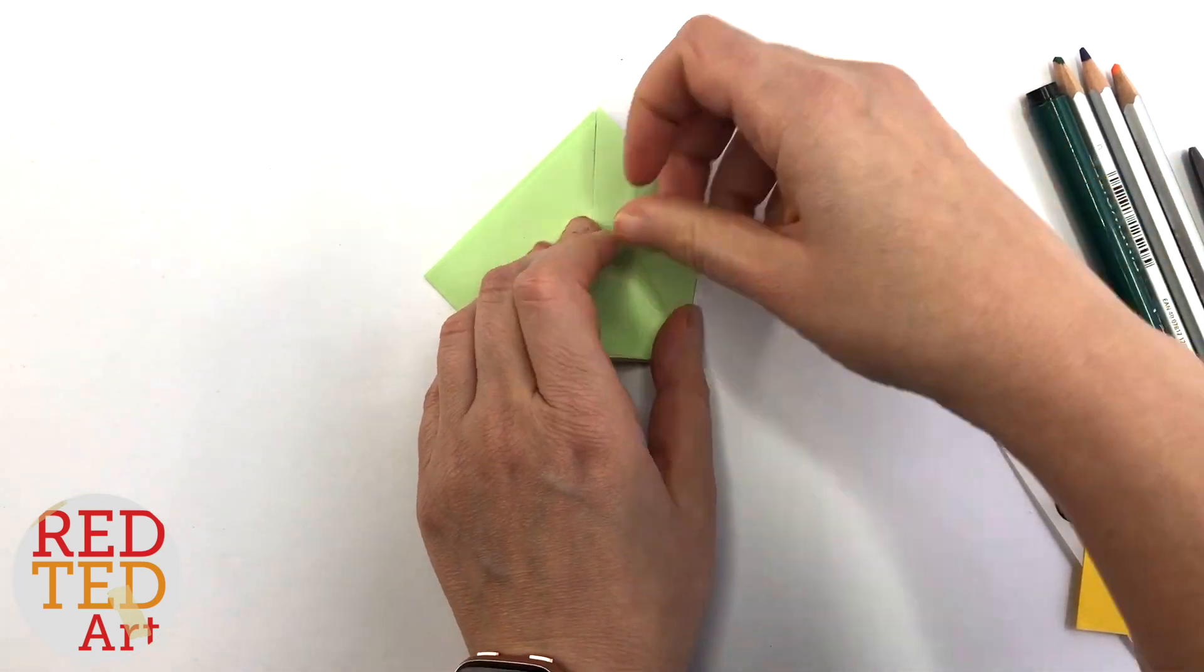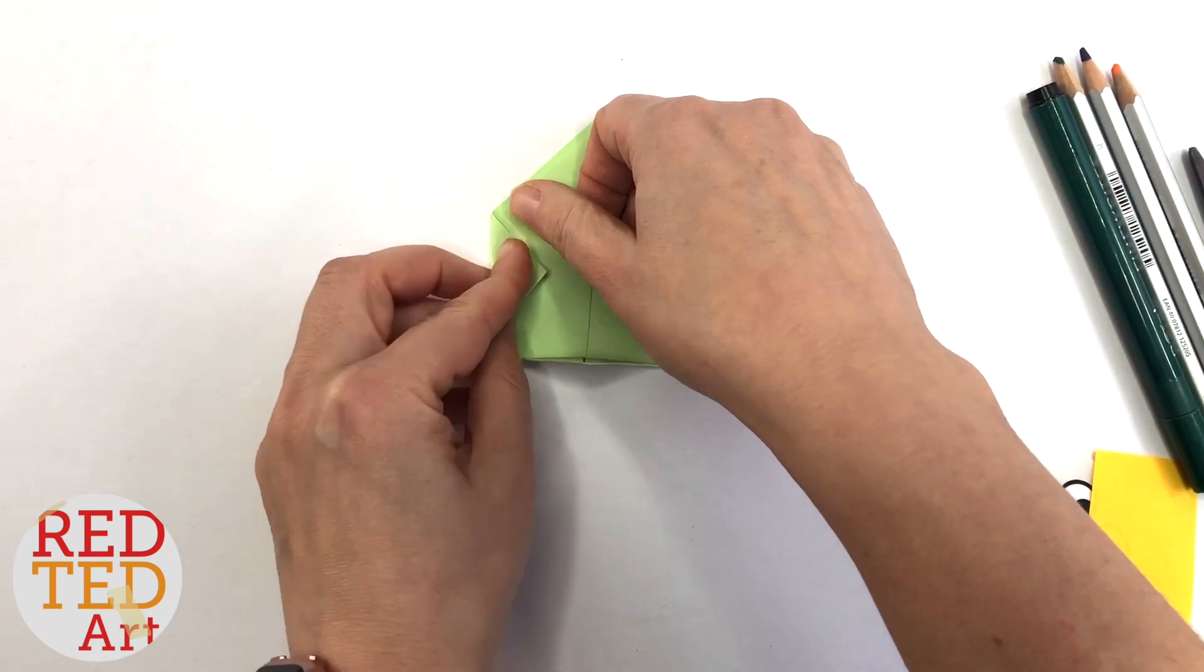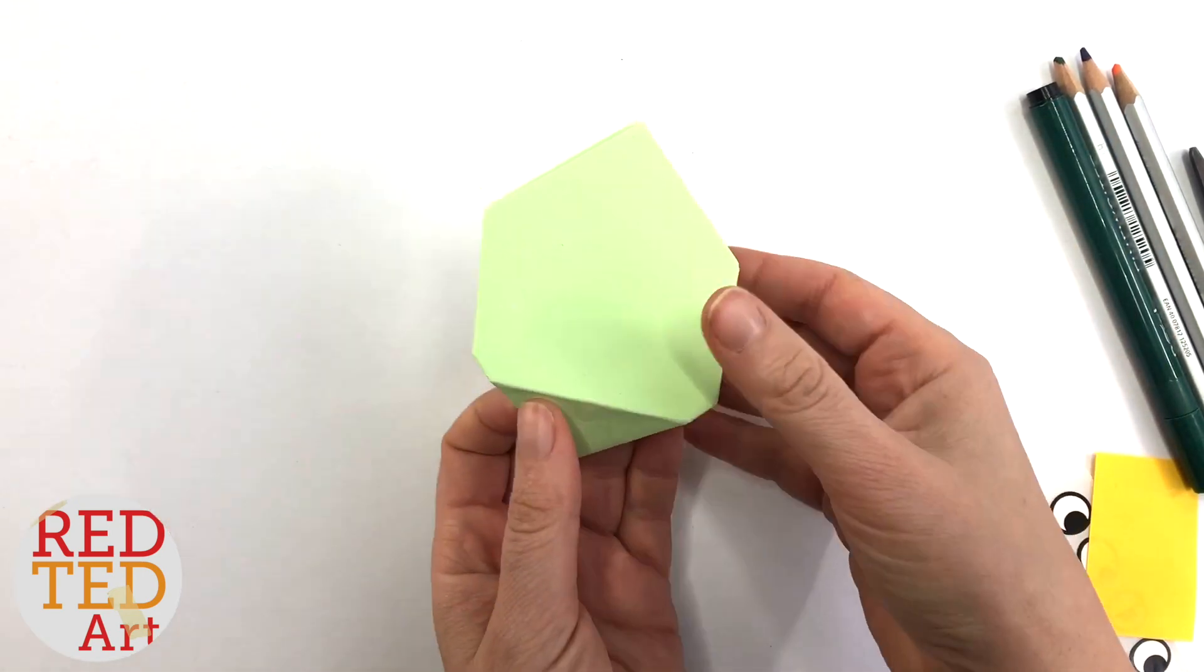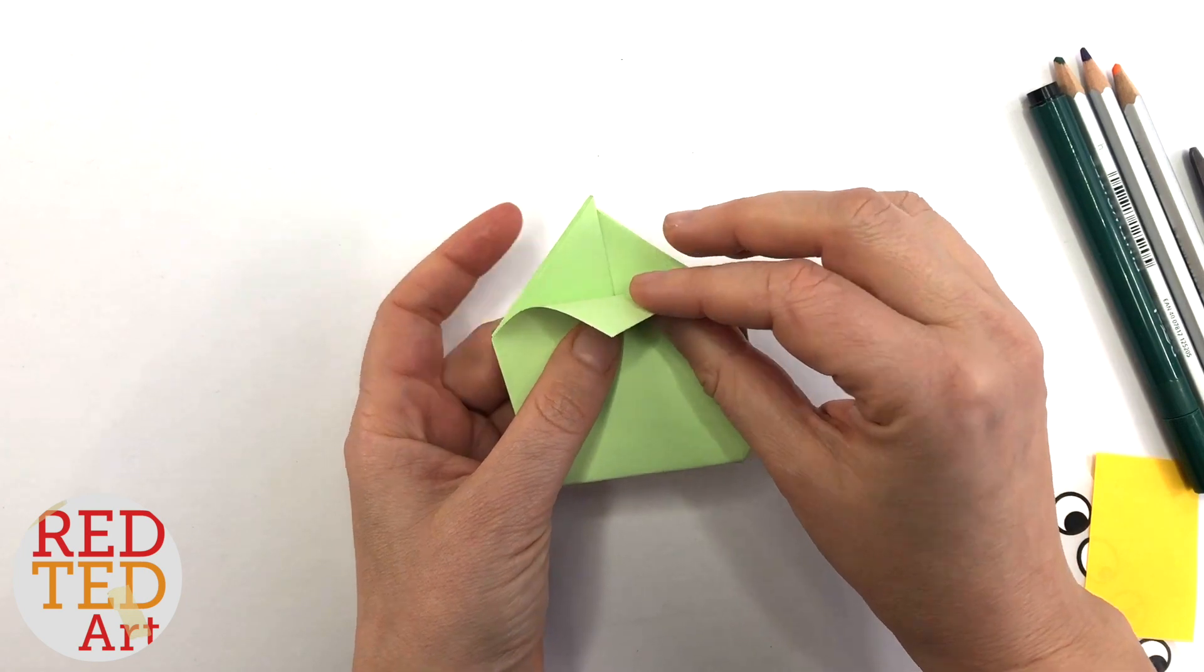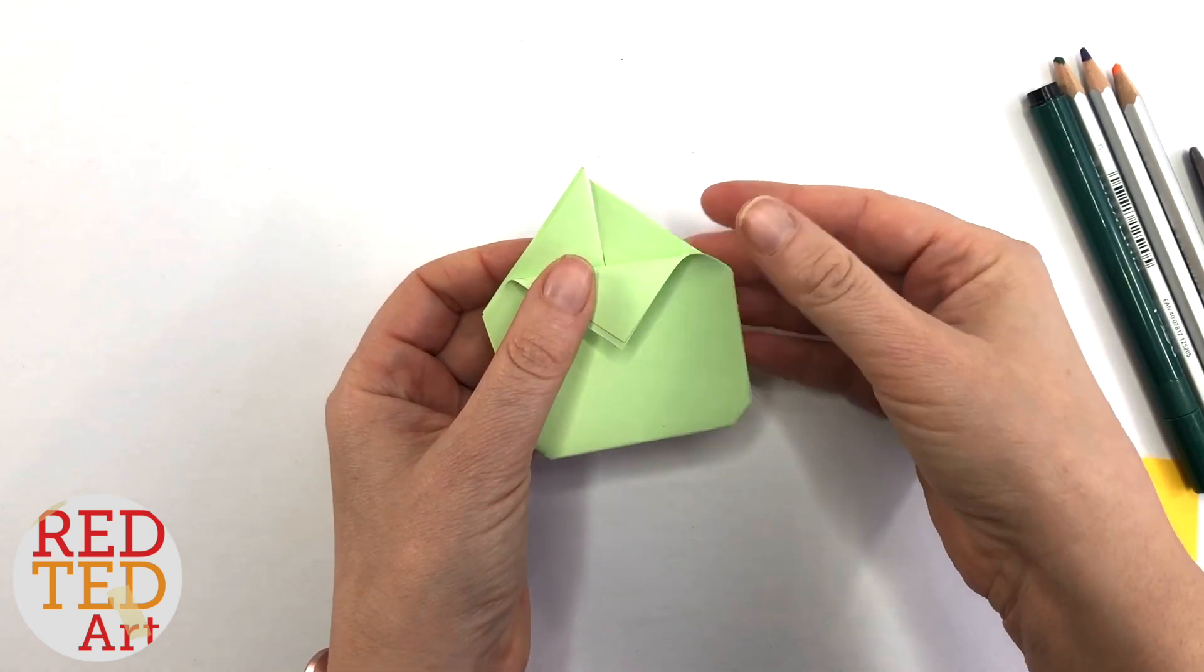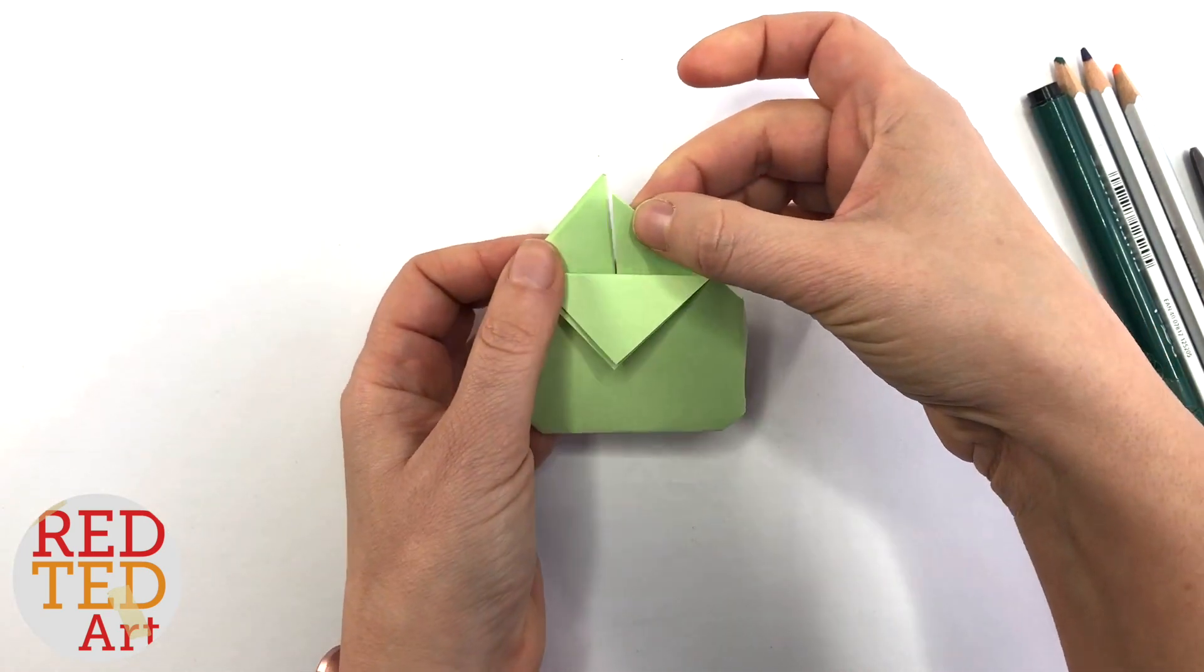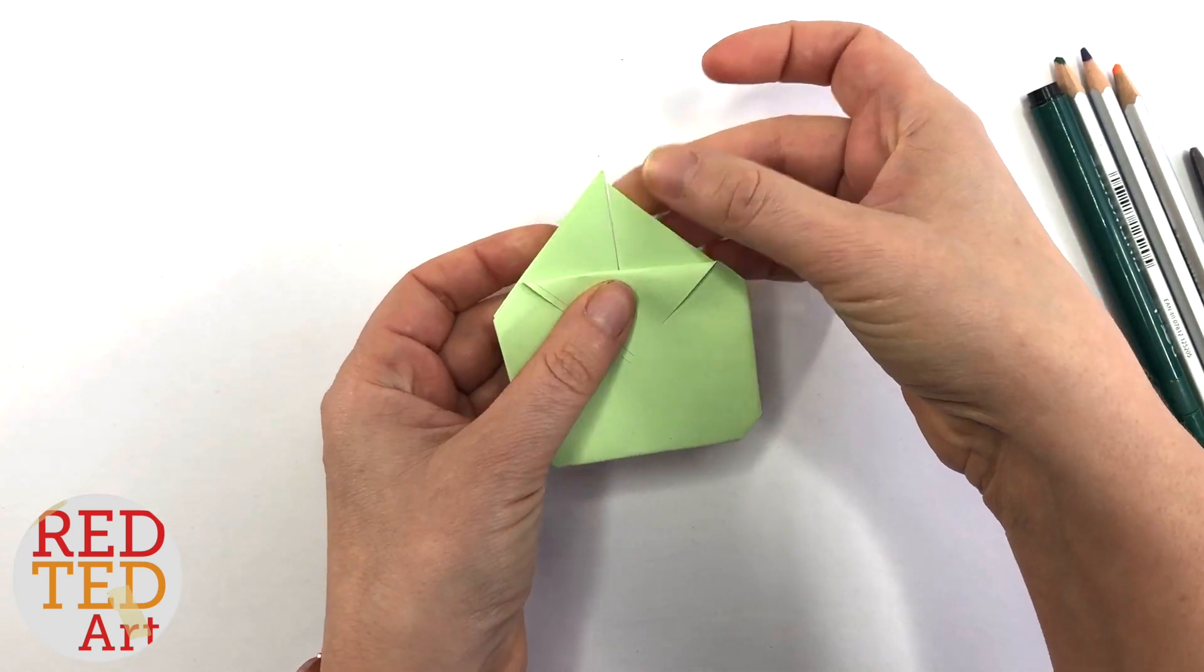Flip it around. Bring down the two flaps. That's your beak. And this is what I mean about the two edges need to be aligned, otherwise you've got a big gap.